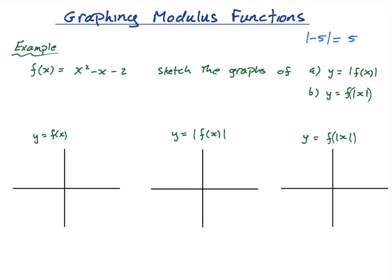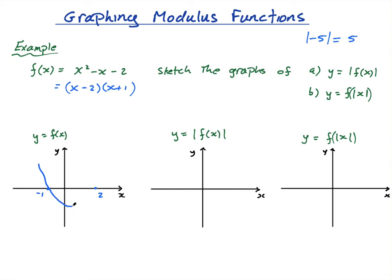Let me label the axes: x and y. To draw the original function, the factors are x minus 2 times x plus 1, which means it has roots at negative 1 and 2, and a y-intercept at negative 2. The minimum is not at the y-intercept — it would be at x equals 0.5, halfway between the two roots.